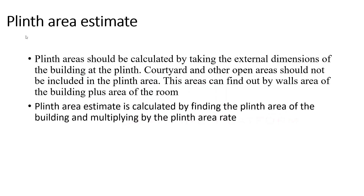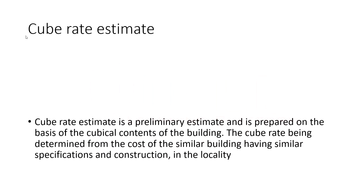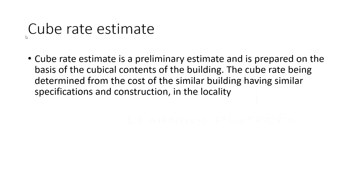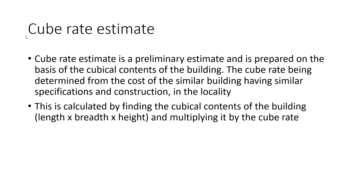The cube rate estimate is a preliminary estimate prepared on the basis of the cubical content of the building. The cube rate is determined from the cost of a similar building having similar specifications and construction in the locality. It is calculated by finding the cubical content — length × breadth × height — and multiplying by the cube rate.